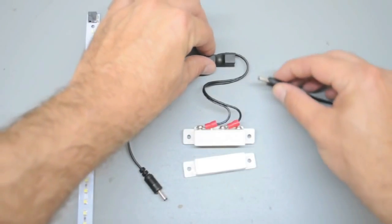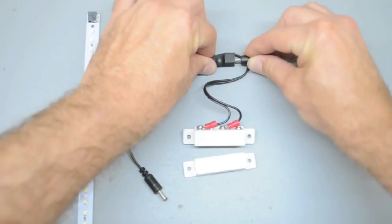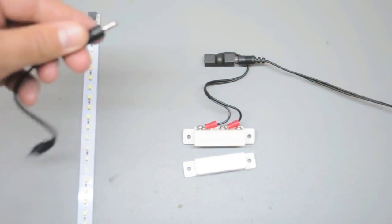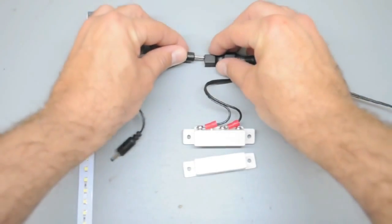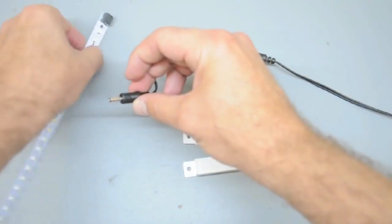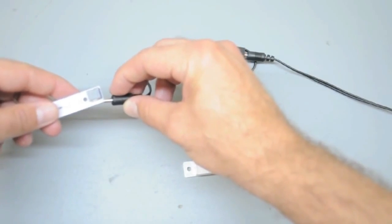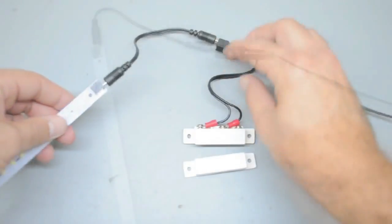Start by plugging the power supply lead into either input on the magnetic switch lead. Now plug one end of the interconnect cable into the open connector on the magnetic switch lead. Plug the other end of the interconnect cable into the connector on your LED panel or flexible strip.